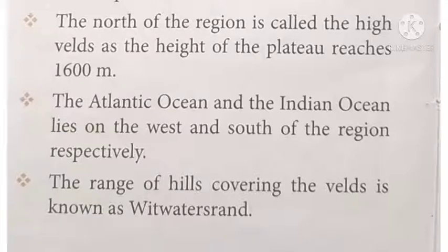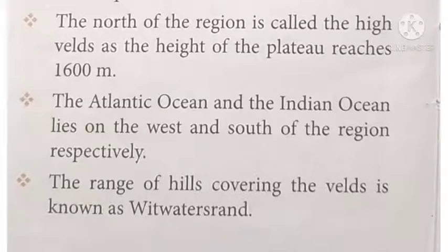The Atlantic Ocean and the Indian Ocean are found to the south of the region. The range of hills covering the Velds is known as the Witwatersrand.